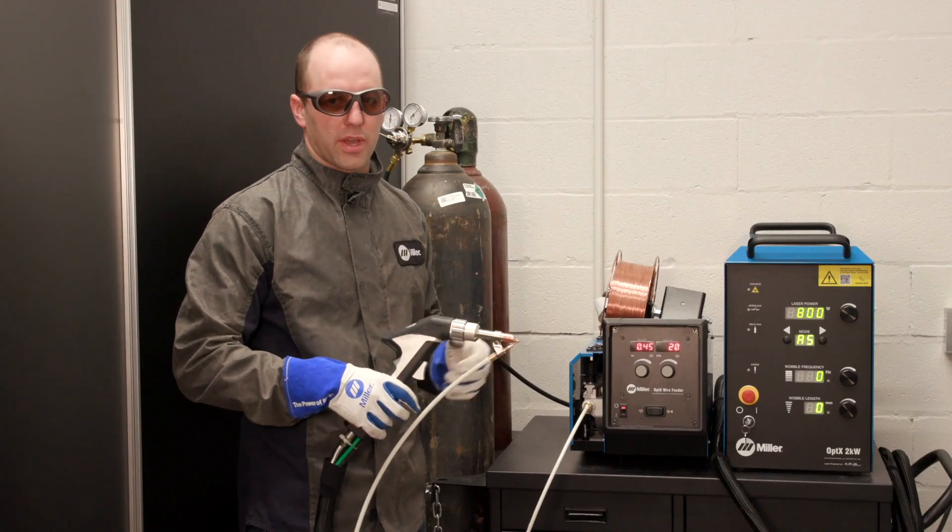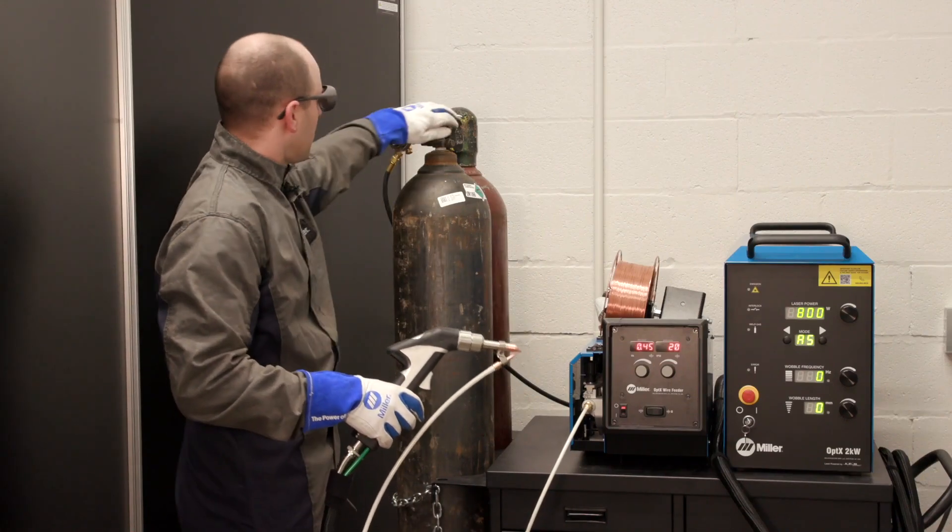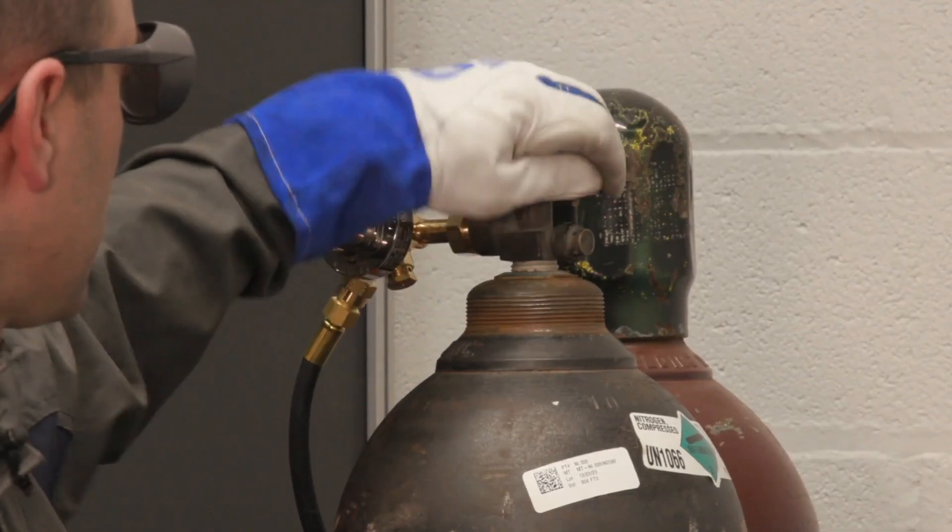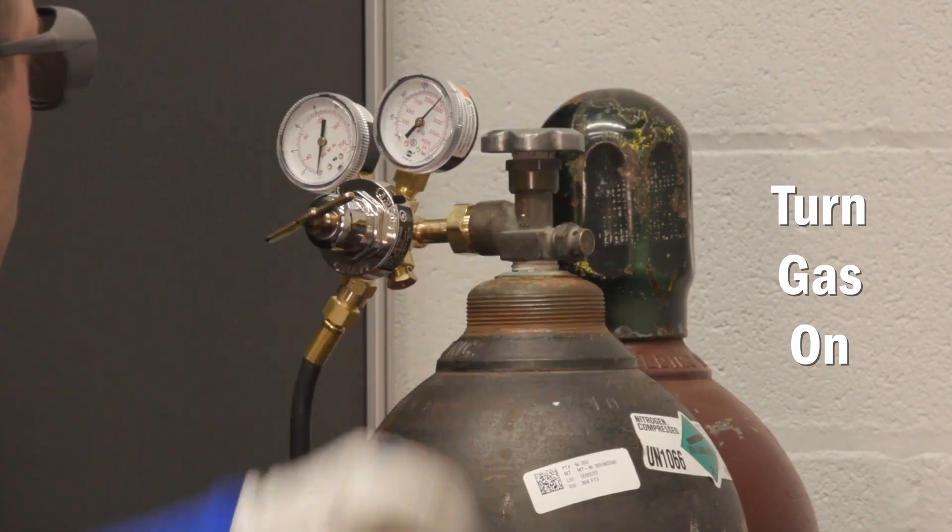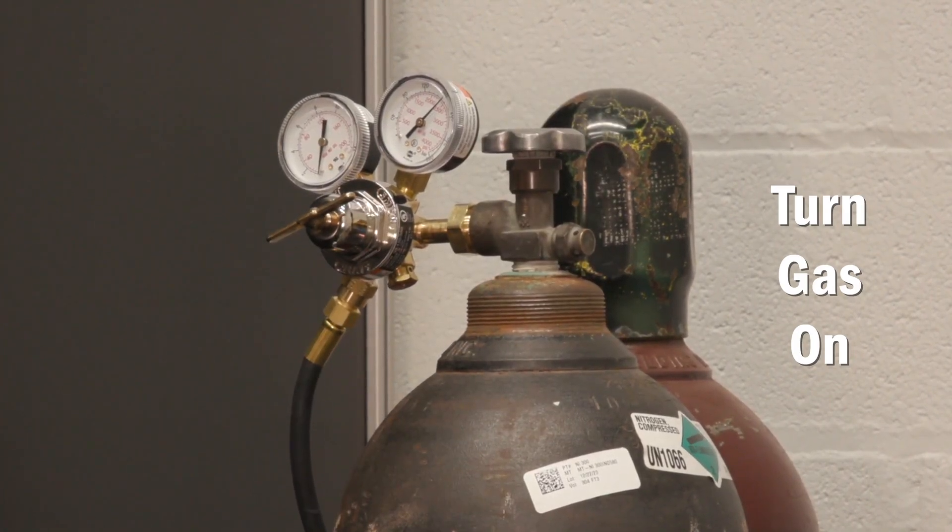Let's set this up for welding. The first step is to turn the shielding gas on, turn the tank on, and then increase the pressure on the regulator.